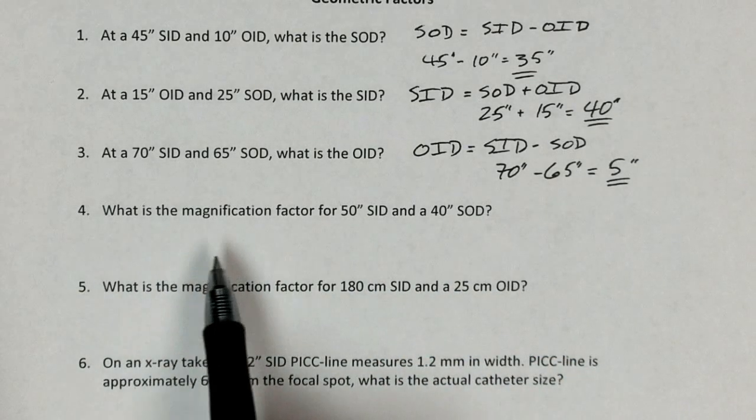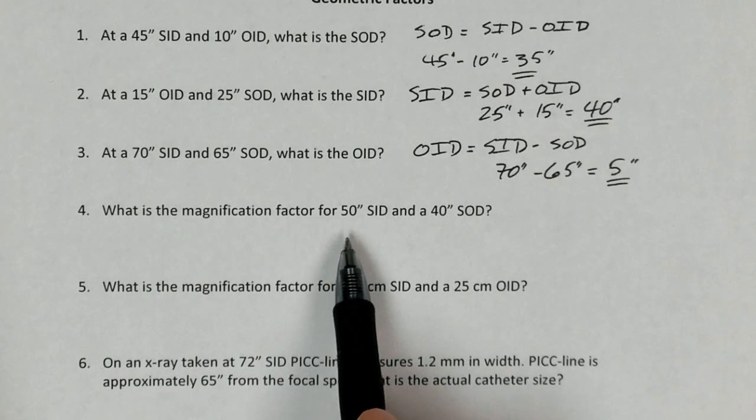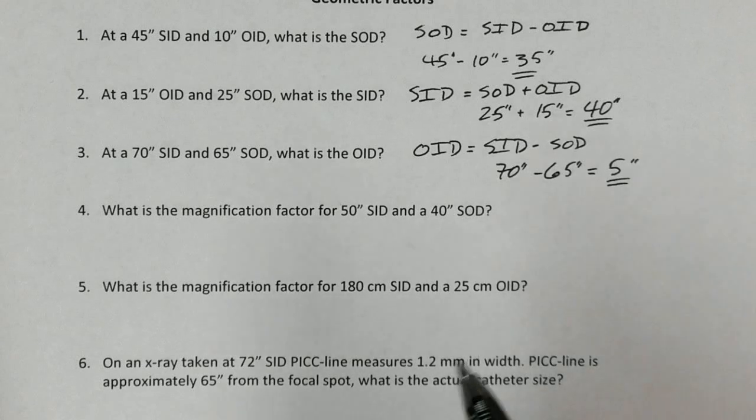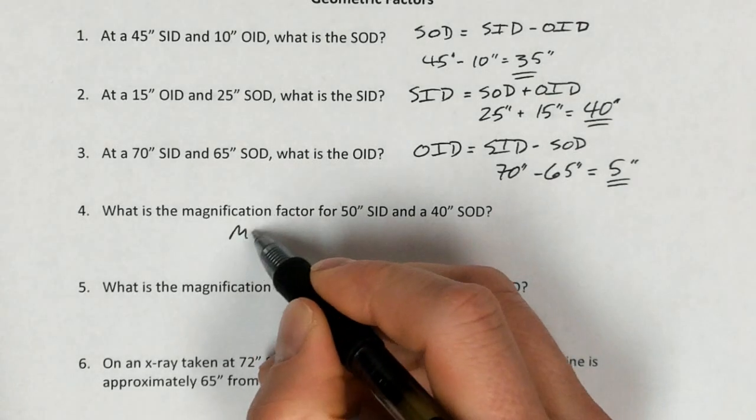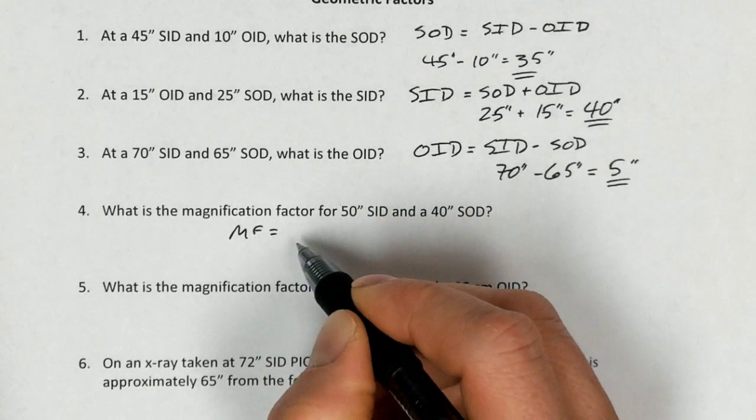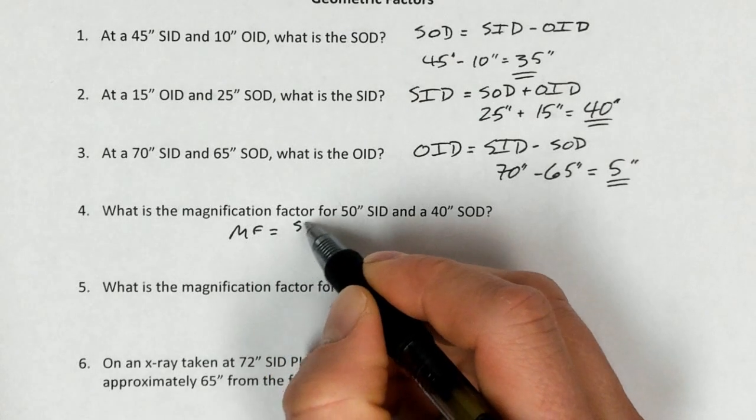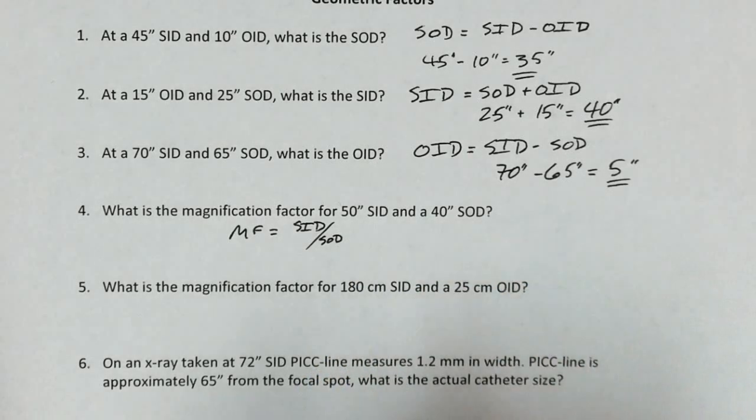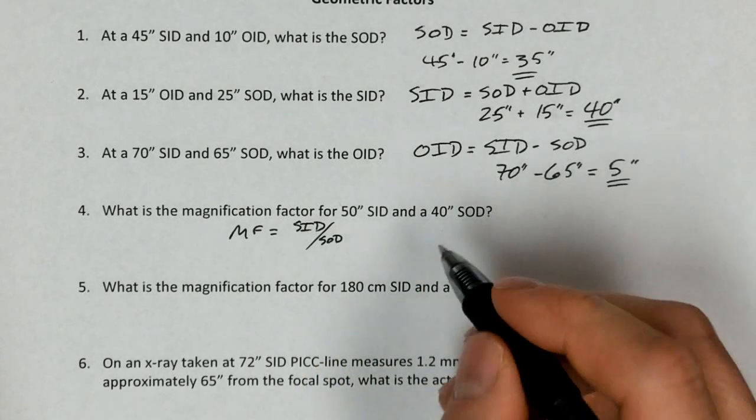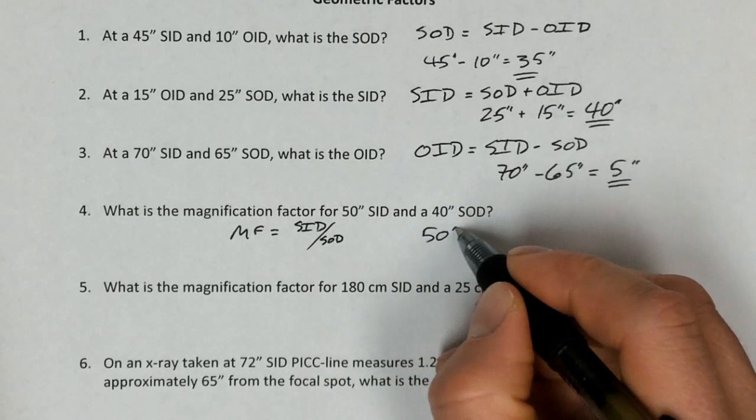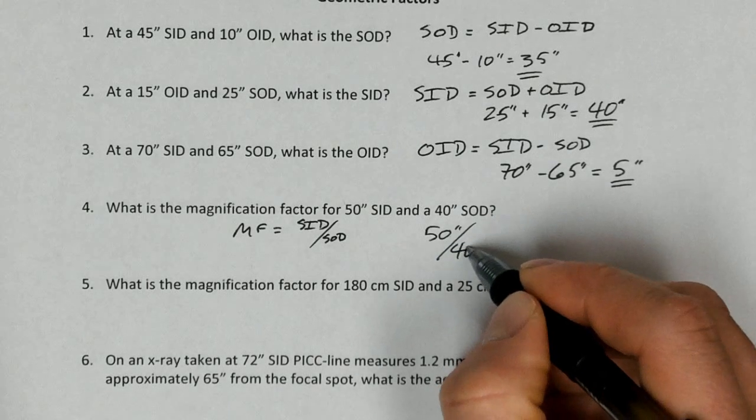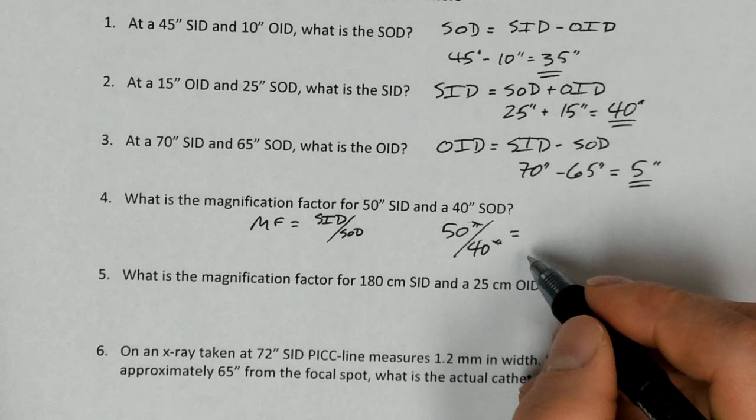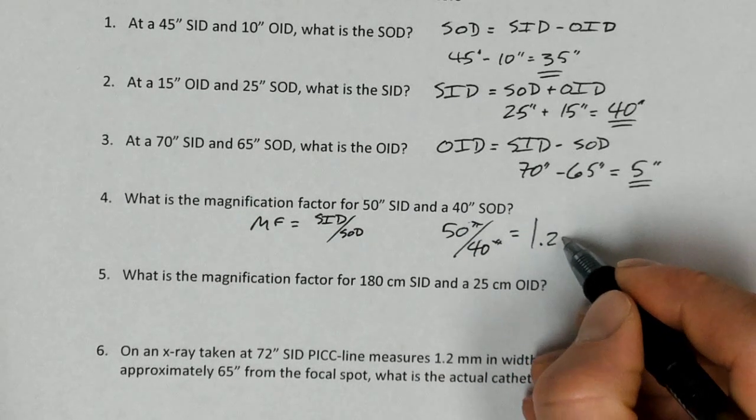So this next problem asks us, what is the magnification factor for a 50-inch SID and a 40-inch SOD? So they were nice to us at this point because they gave us what we needed, but magnification factor equals the SID over the SOD is the way I remember, SID over SOD. Imagine a guy named SID sitting on a grassy place. And so I will take 50 inches, divide that by 40 inches, the inches will cancel out, and it's going to give me a dimensionless factor of 1.25.